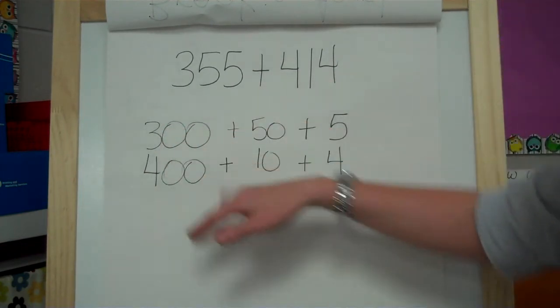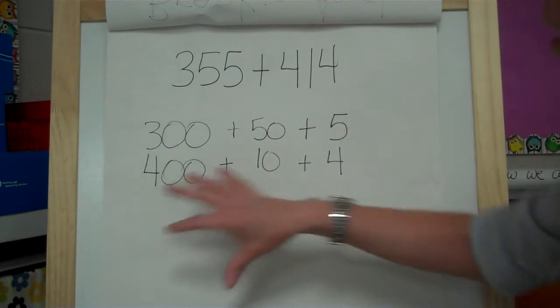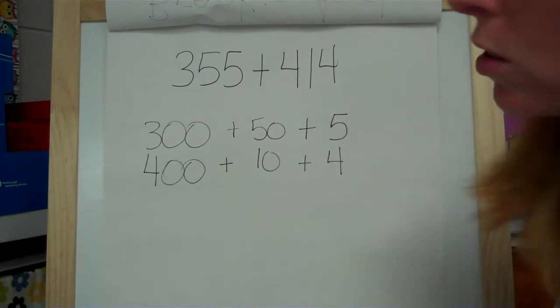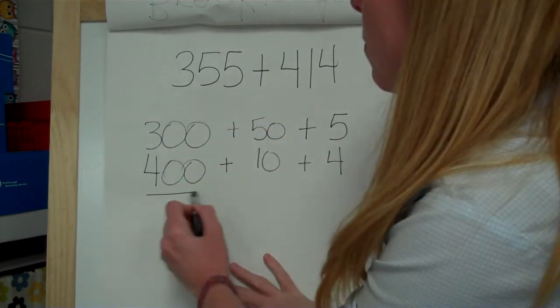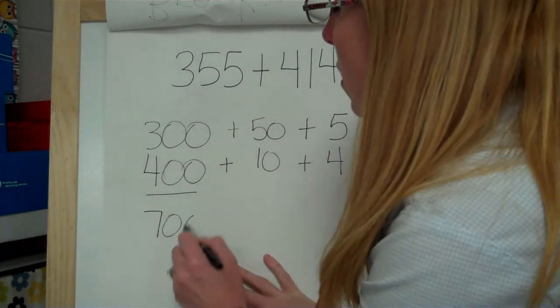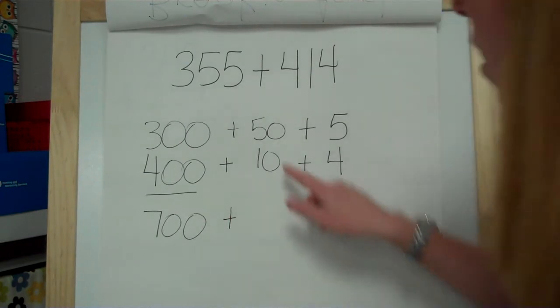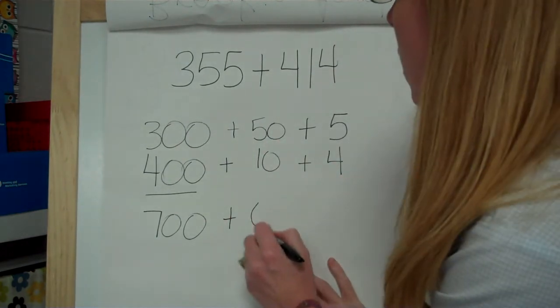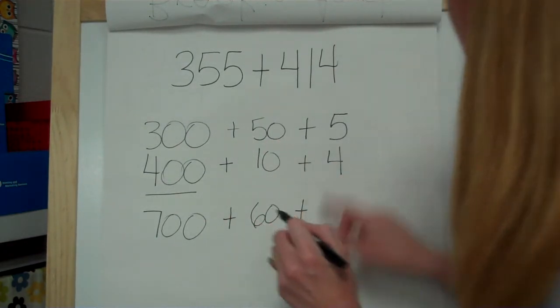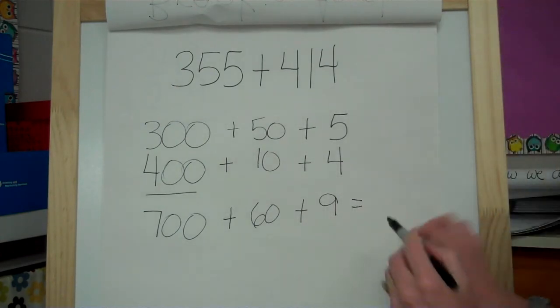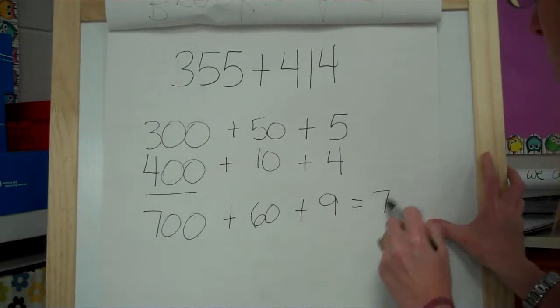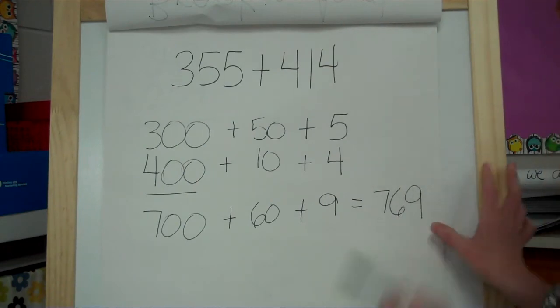So now what I can do is I can add those hundreds and then the tens and the ones and then just put them all together and it makes it a little easier. Alright, so I'm going to start over here. So 300 plus 400 is 700, plus 50 plus 10 would be 60, and 5 plus 4 is 9. So then I can add all that together and it's going to give me 769.